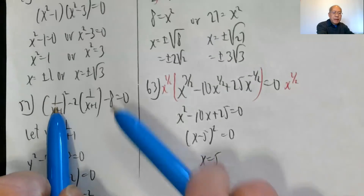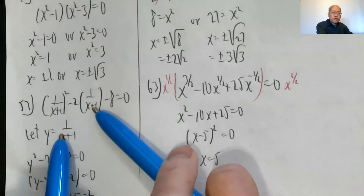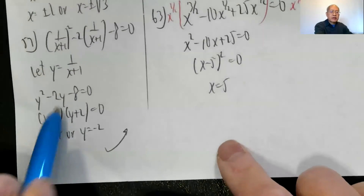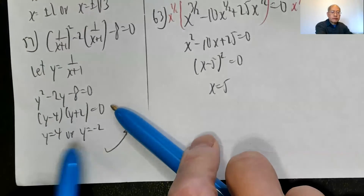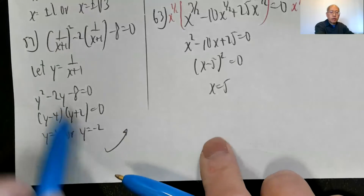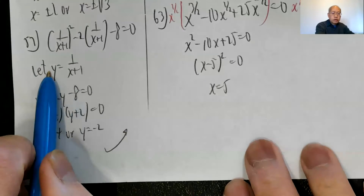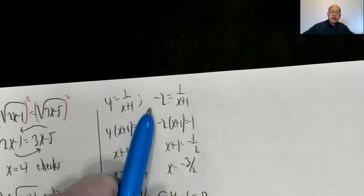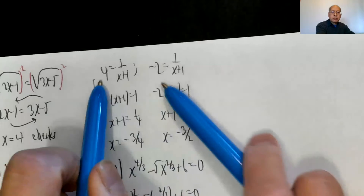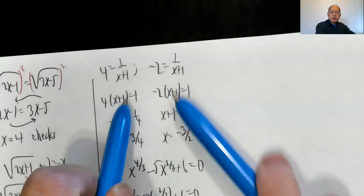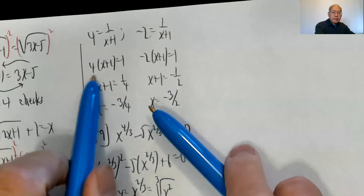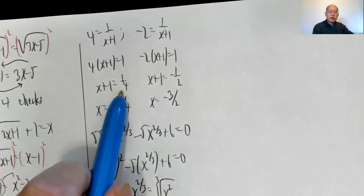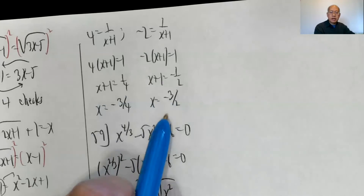Problem fifty-seven: notice that the pattern matches, so do a substitution where y equals one over x plus one. Then you have y squared minus two y minus eight equals zero, which factors into y minus four times y plus two equals zero. So y equals four or y equals negative two. Plugging back in: four equals one over x plus one and negative two equals one over x plus one. Multiply both sides by x plus one for both equations. Dividing and subtracting one gives negative three fourths and negative three halves respectively.